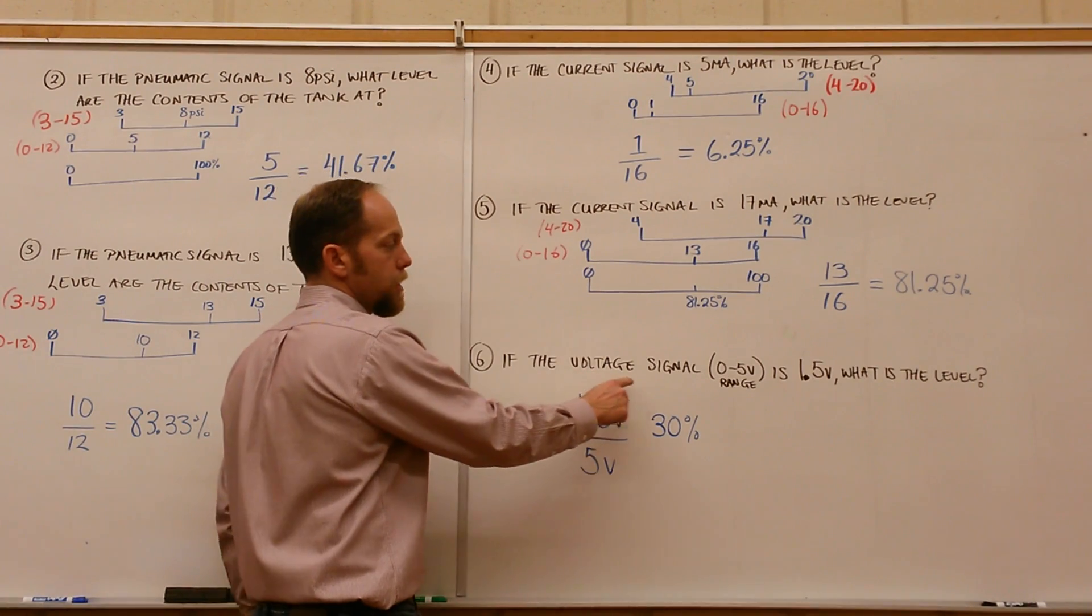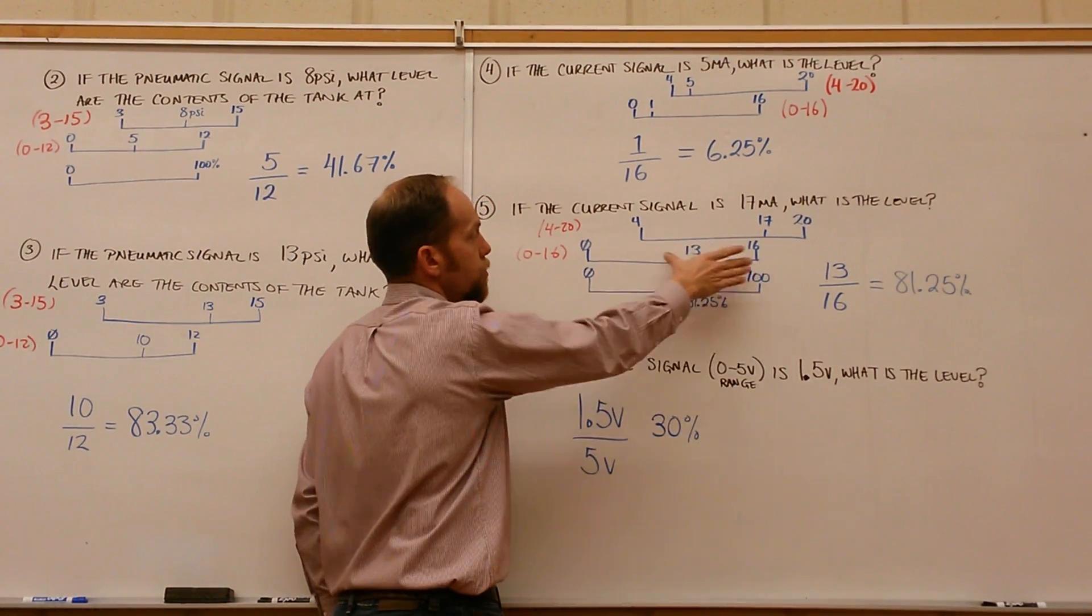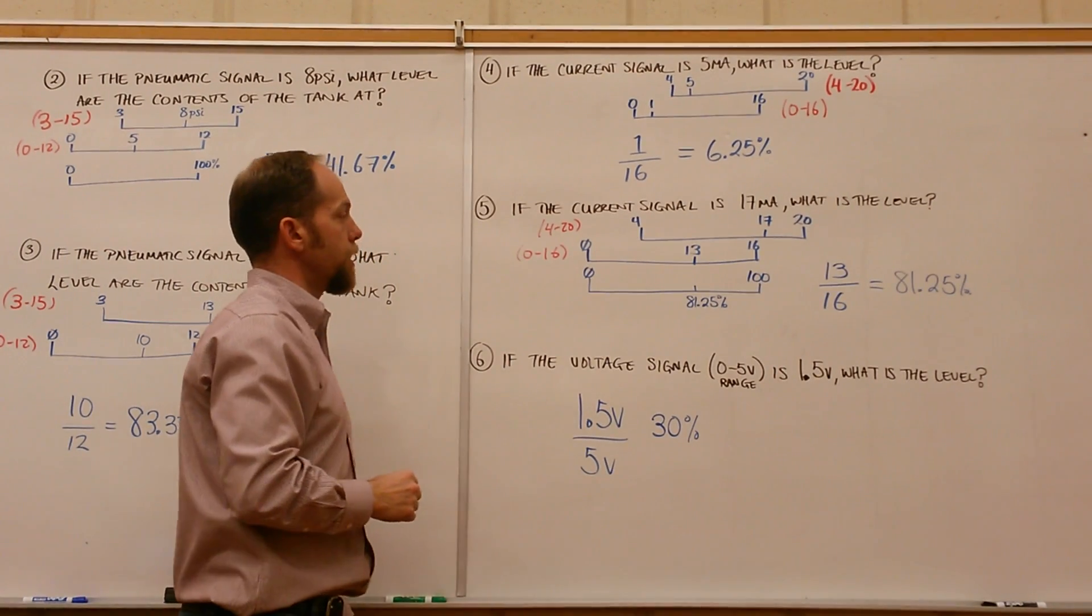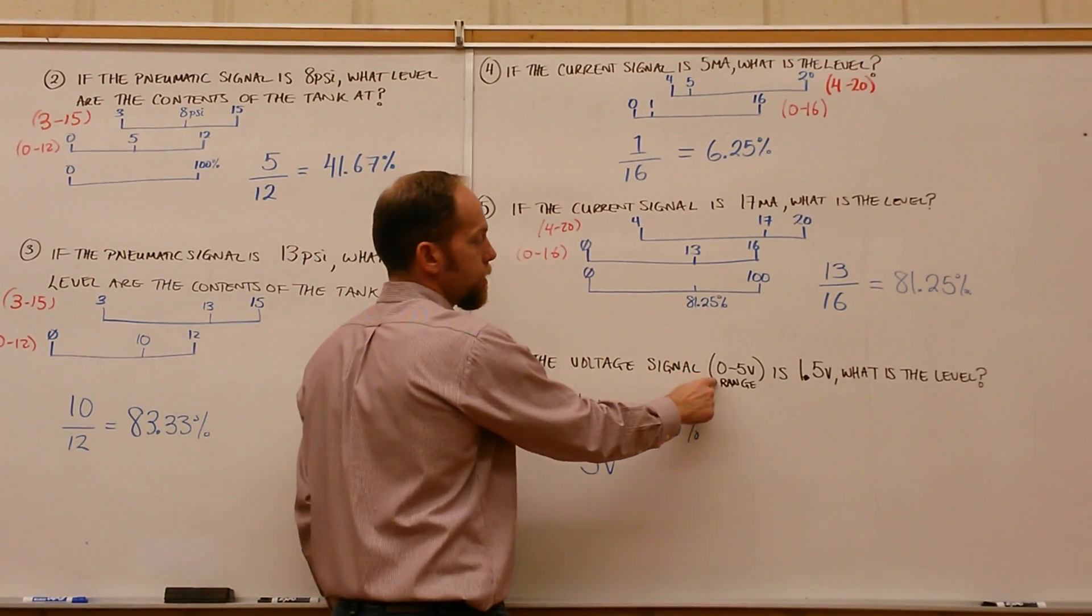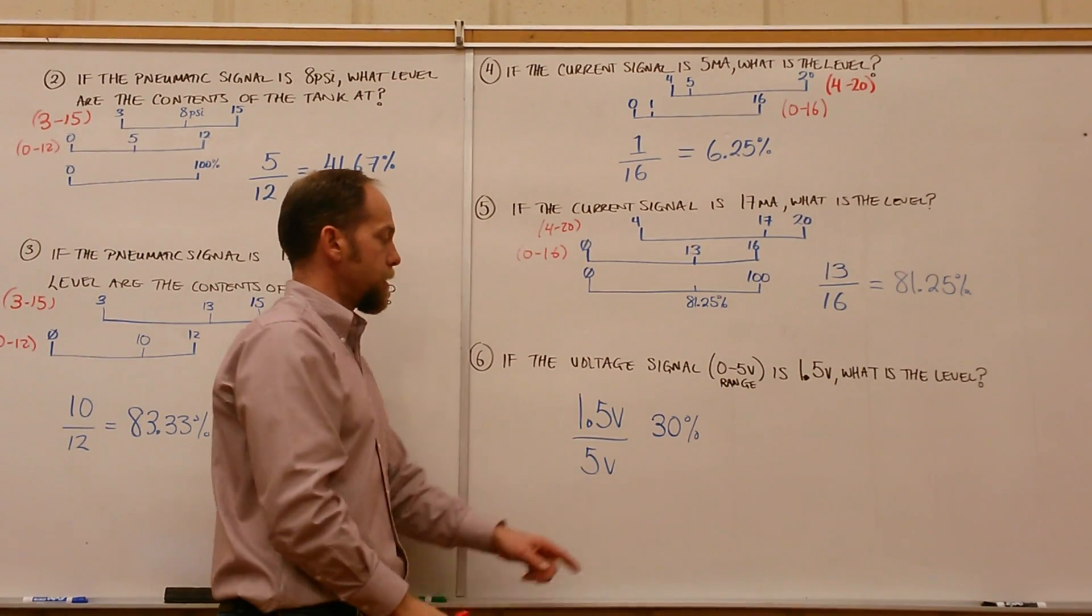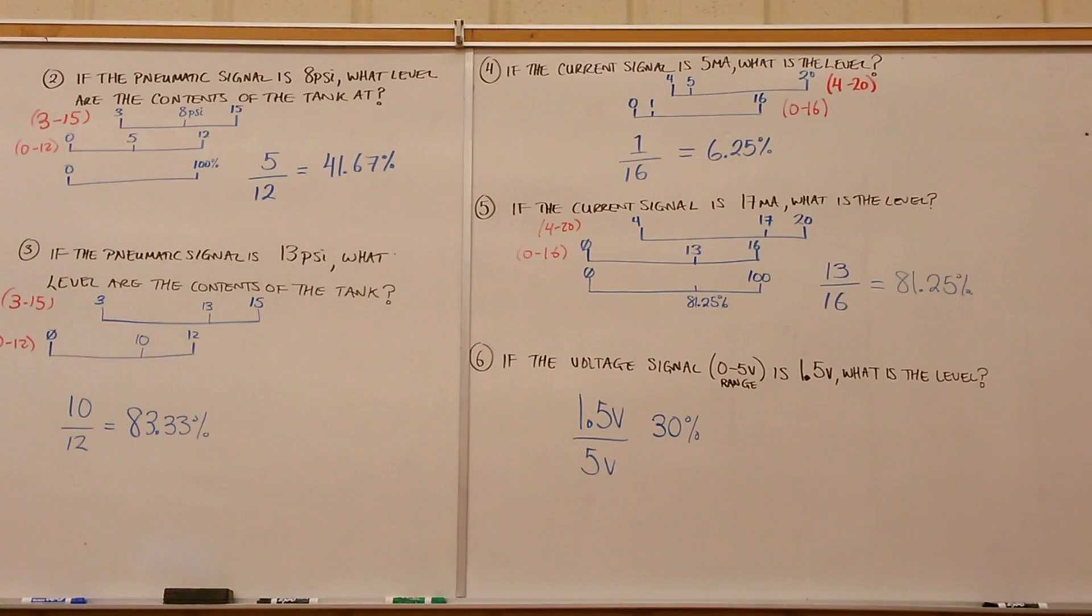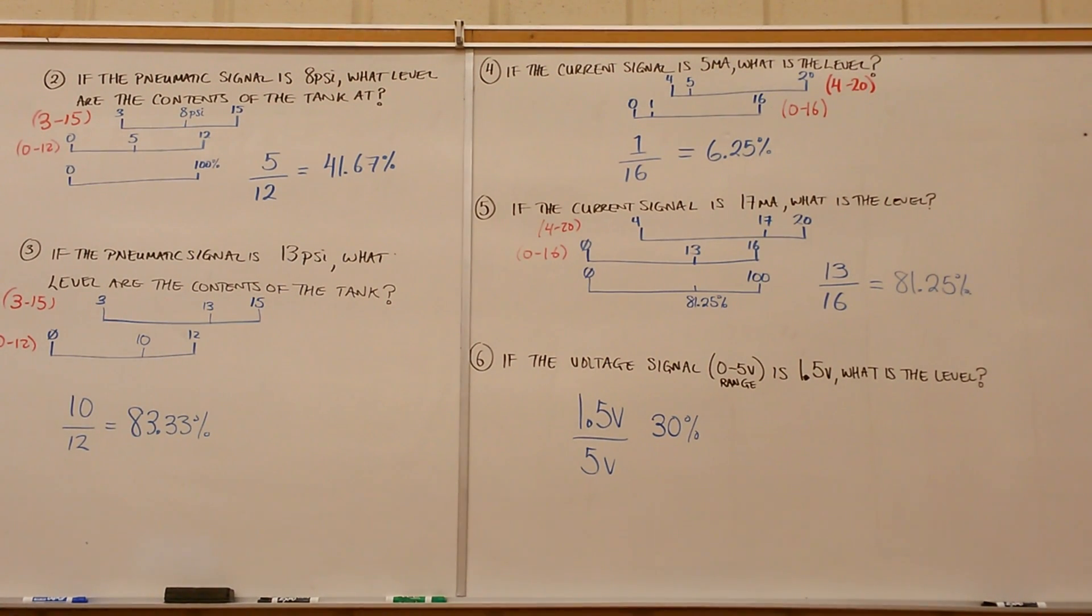This one here, if it's a voltage signal and it's already referencing 0, we don't have to do any of this fancy shifting of the range. It's already referencing 0, so we can take 1.5, divide it by 5, and that gives you 30%. So that's how we track the two horizontal points.